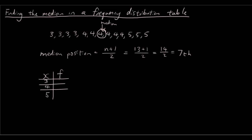And the frequency is how many times this number occurs. So 3 occurs 4 times, 4 occurs 6 times, and 5 occurs 3 times.